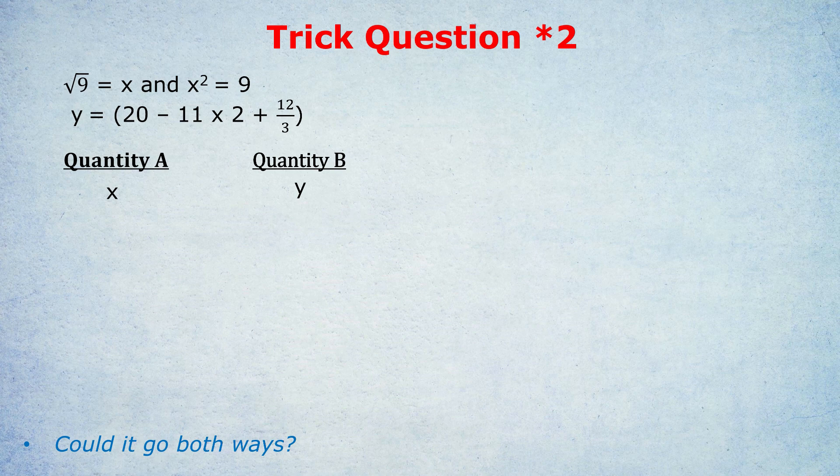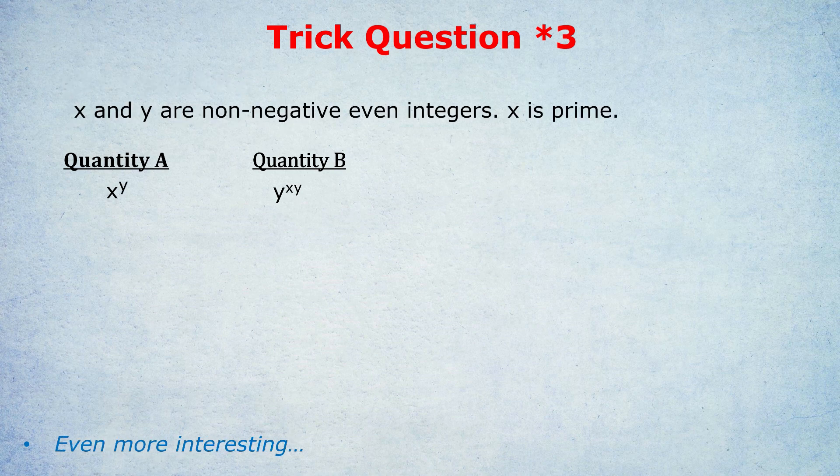And now for the final trick — arguably a slightly harder one, though some people will find it easy. x and y are non-negative even integers. x is prime. Quantity A is x to the power of y, quantity B is y to the power of xy.